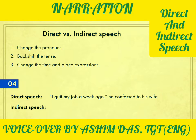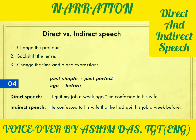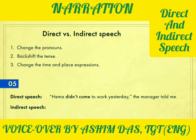Number four: 'I quit my job a week ago,' he confessed to his wife — meaning he admitted the truth. The answer is: he confessed to his wife that he had quit his job a week before. Notice the verb in the direct quote is already simple past — 'quit.' When we backshift simple past it changes to past perfect: 'had quit.' And 'ago' changes to 'before' in indirect speech — that's just a rule to remember.